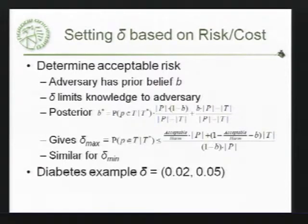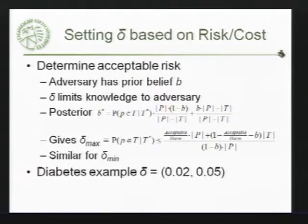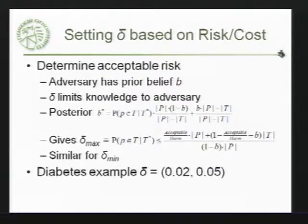What you actually set this on is based on the prior belief and the posterior belief. Given what they know without seeing T-star, the anonymized data, and what they know after, the difference between those has to be in the acceptable range. In this particular example, using some actual numbers similar to those I gave, we end up with between 0.02 and 0.05 as being a reasonable range.